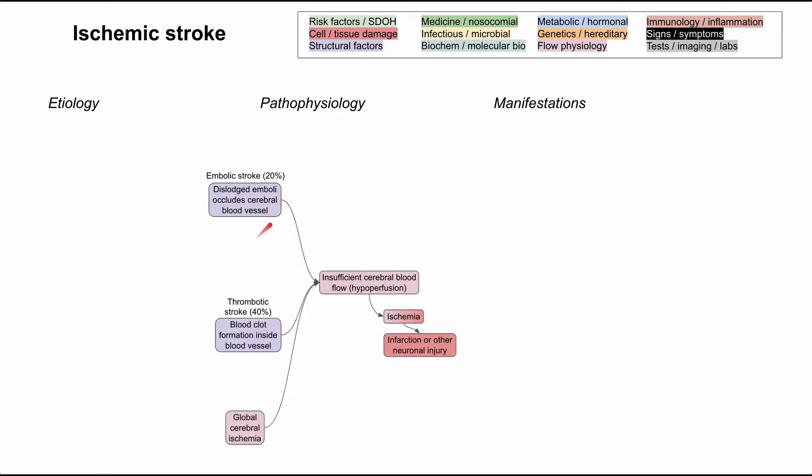Now, you can lump the etiologies of ischemic stroke into three big categories. You can have embolic strokes, which make up about 20%. And that's when a dislodged emboli occludes the cerebral blood vessels. So emboli are any kind of material or matter or structural things that can get into the blood vessels. They could be a ball of fat. They could be a ball of platelets, like a little clot. They could be air, even. Anything that gets into the blood vessels and occludes the blood vessels going to the brain, preventing the brain from getting oxygen.